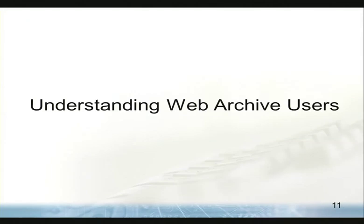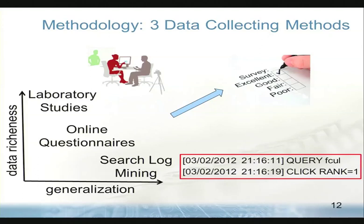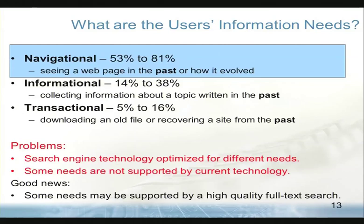I also tried to understand the users, using three data collecting methods: laboratory studies, online questionnaires, and search log mining. I found very interesting patterns. I categorized the users' information needs, and as you can see, there are mostly three informational needs. What users want the most is navigational — they want to see a web page in the past or how it evolved. The key insight is that search engine technology is optimized for informational needs, while web archive users have mostly navigational needs. So the technology needs to be optimized accordingly.